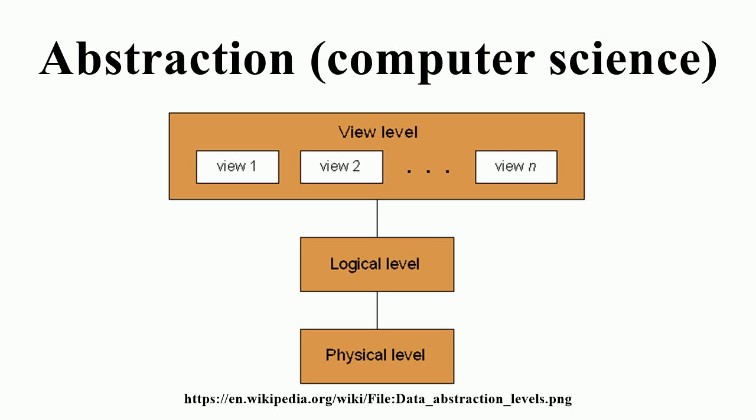Data abstraction enforces a clear separation between the abstract properties of a data type and the concrete details of its implementation. The abstract properties are those that are visible to client code that makes use of the data type, the interface to the data type, while the concrete implementation is kept entirely private,